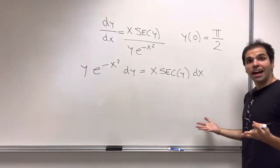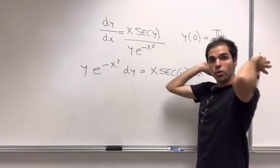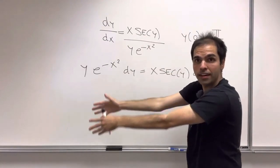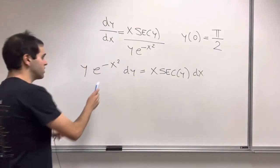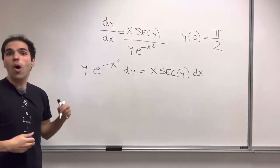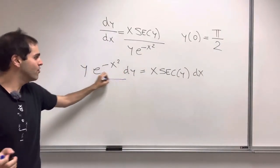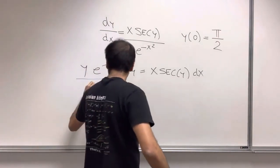And the main idea is, let's try to put all the y's on one side and all the x's on the other side. So in this case, since we already have y and dy, let's divide by e to the minus x squared.